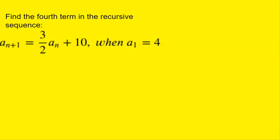Let's find the fourth term in the recursive sequence aₙ₊₁ = (3/2)aₙ + 10, when a₁ = 4.